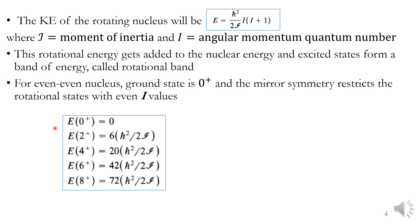With the ground state at I=0, the first excited state E(2+) is 6 times ℏ²/2ℐ, and the 4+ state is 20 times ℏ²/2ℐ. The allowed quantum numbers are I = 0, 2, 4, etc., where odd values of I are not possible by mirror symmetry. These are the possible rotational energy levels above the ground state.